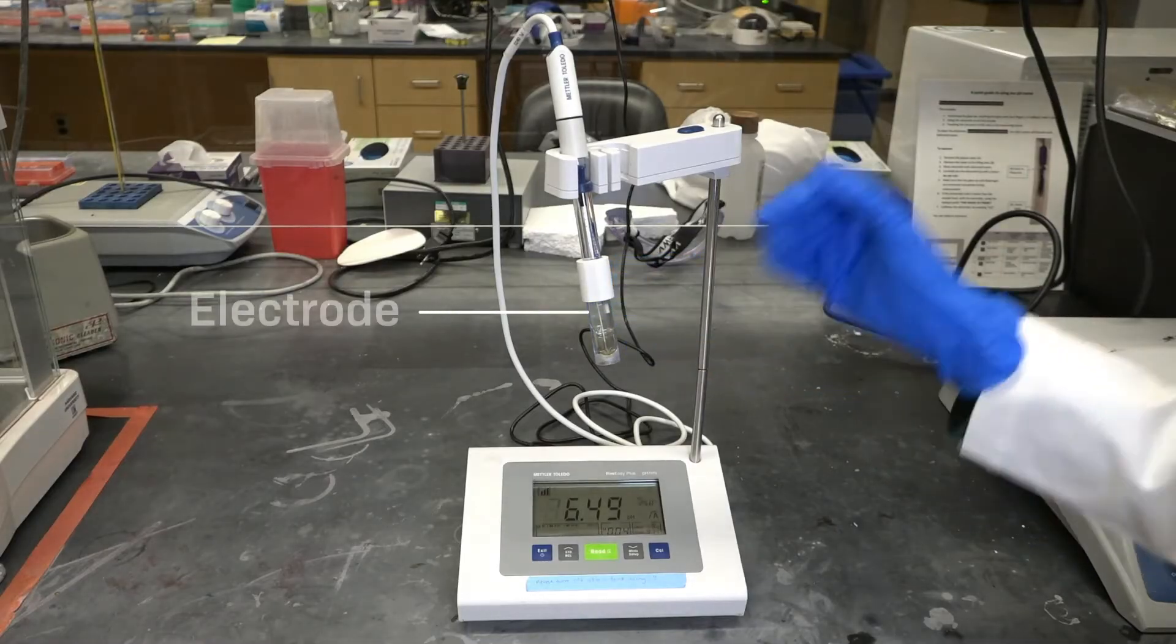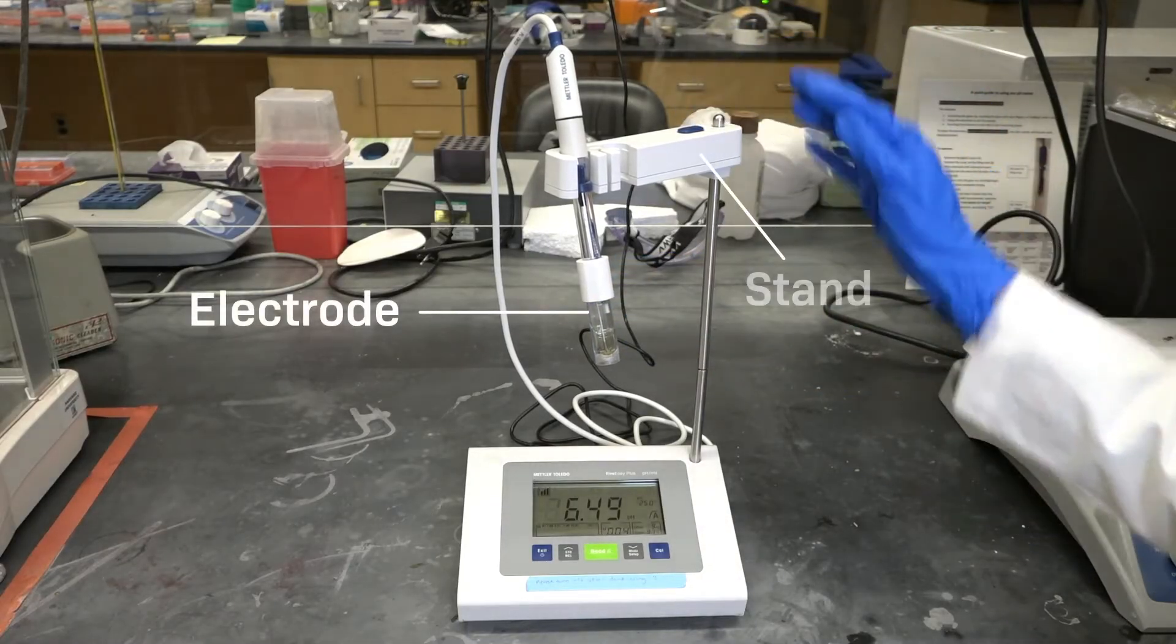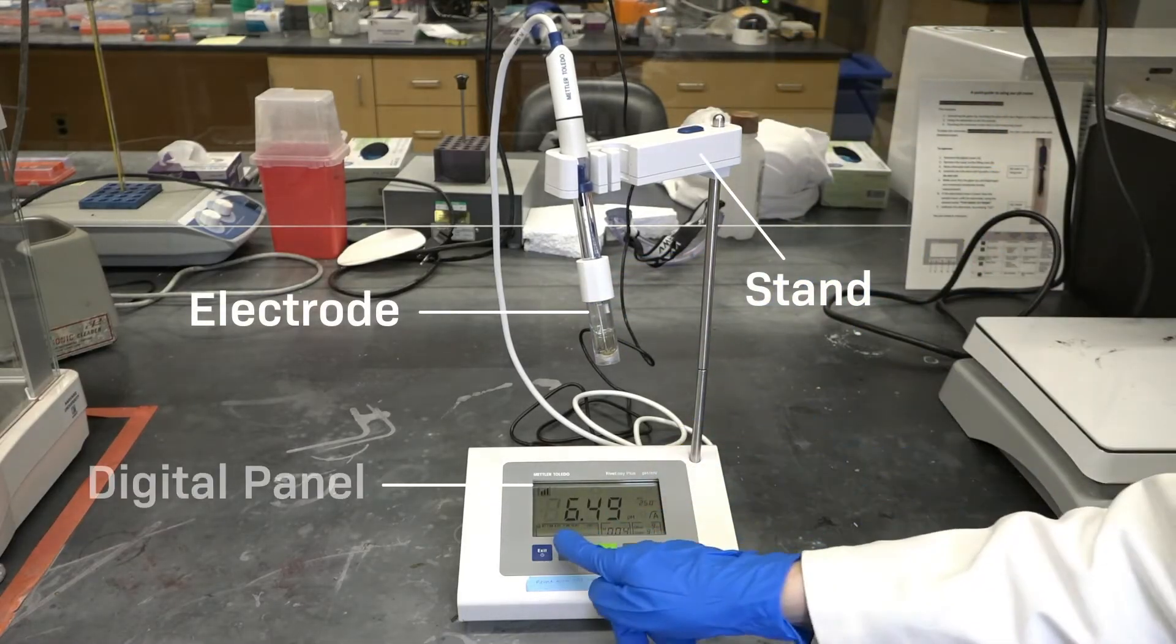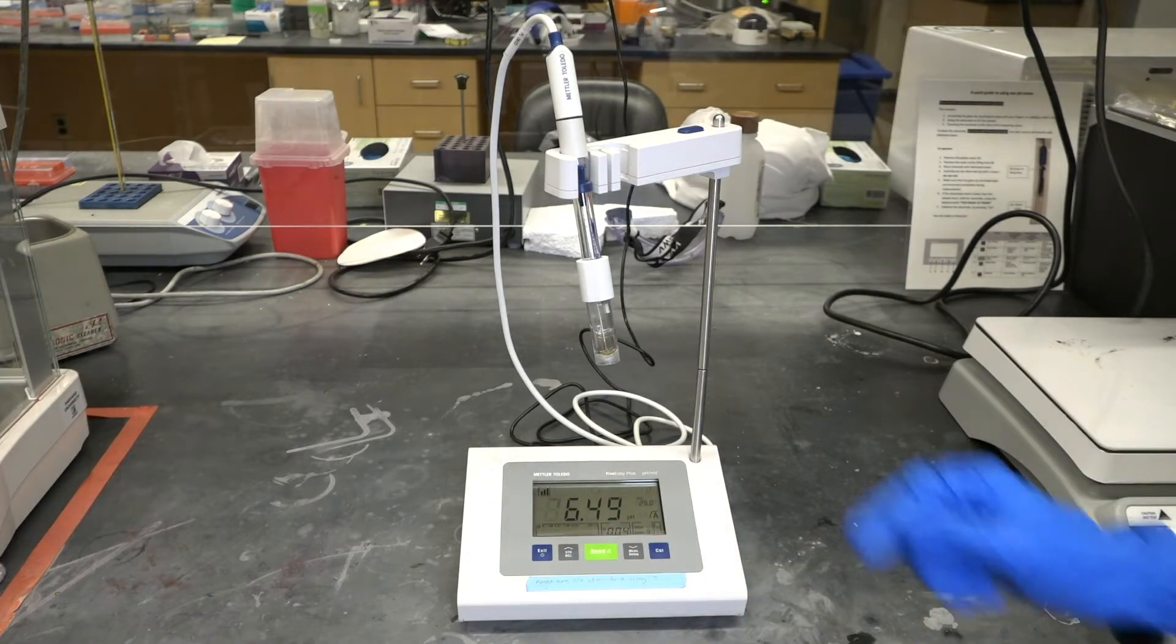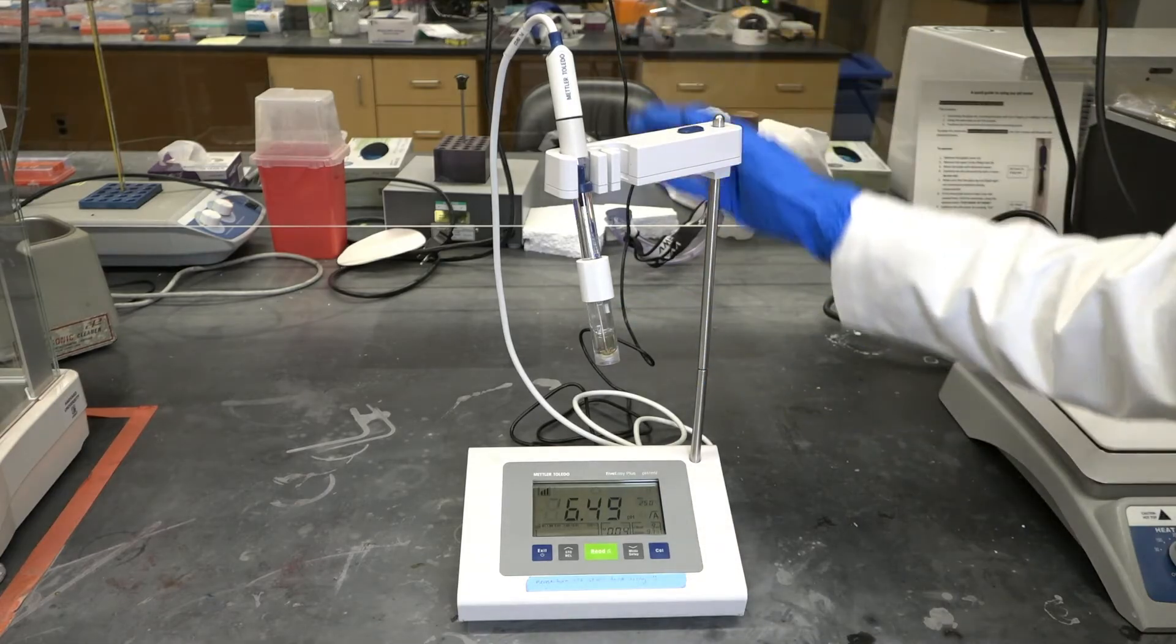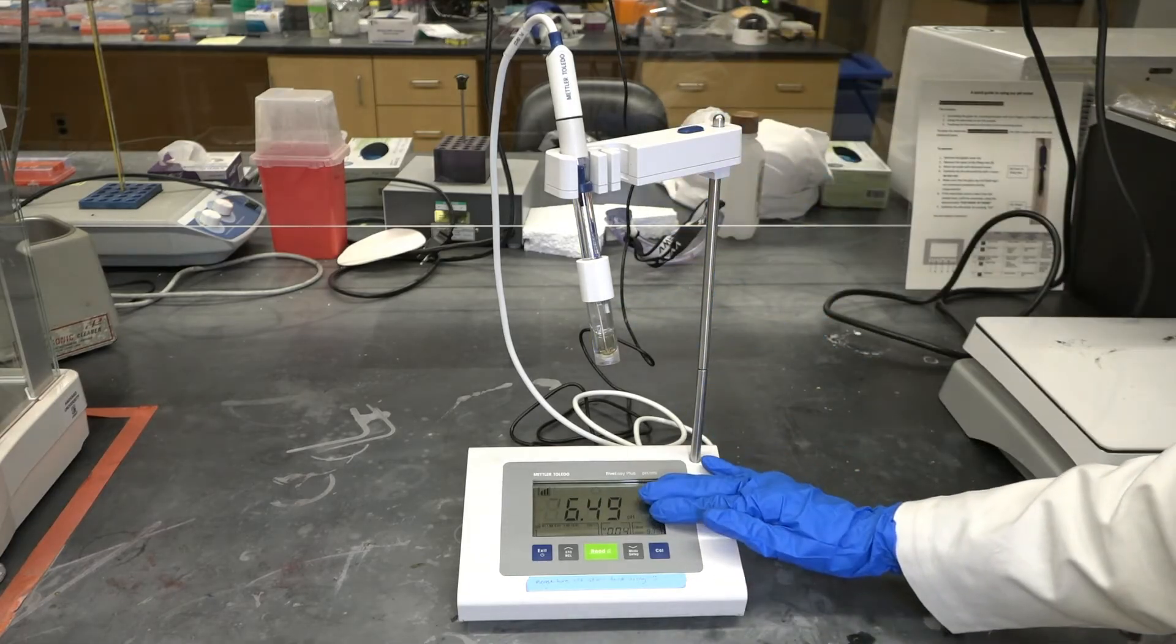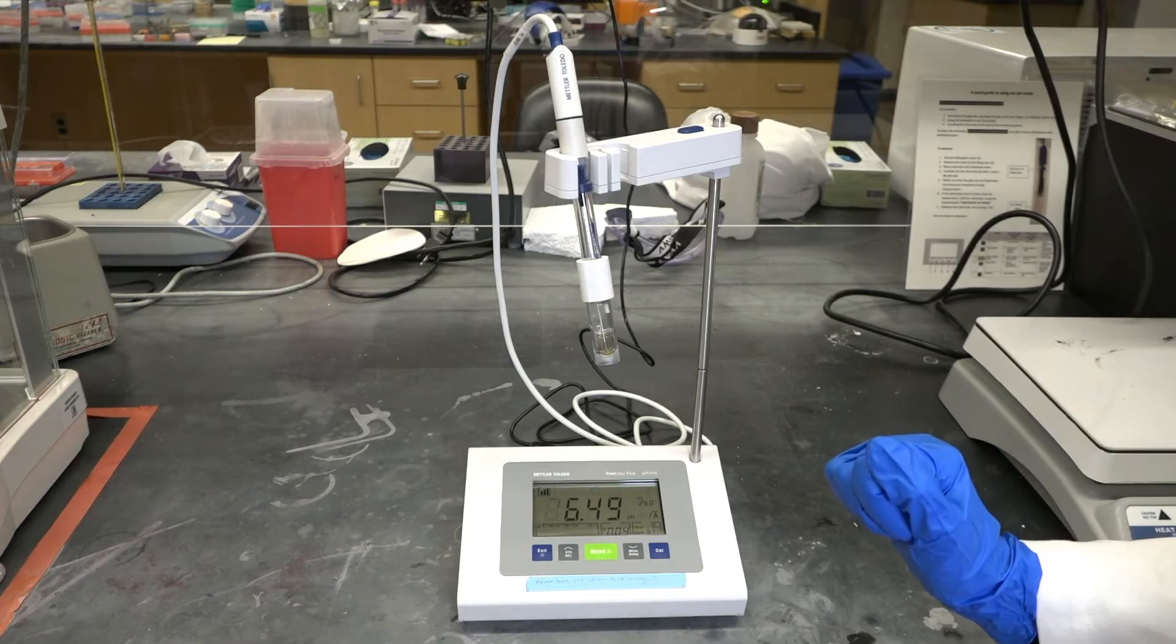The instrument we use to measure pH in the lab is fittingly called a pH meter. It consists of an electrode, a stand to hold up the electrode, and a digital panel for controlling the instrument and displaying measurements. The electrode will measure the electrical activity of the hydrogen ions in a solution, and the panel will translate that to a pH value ranging from 0 to 14.